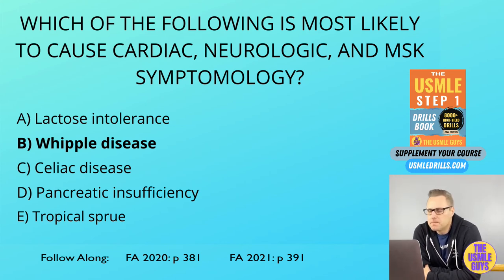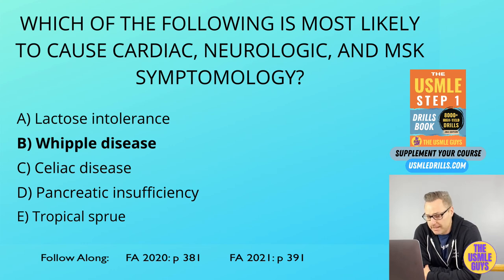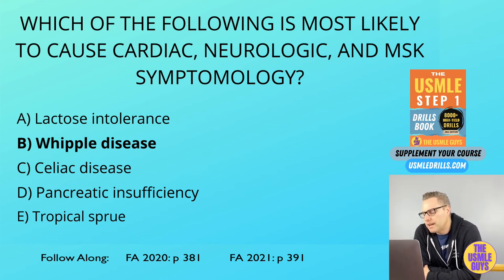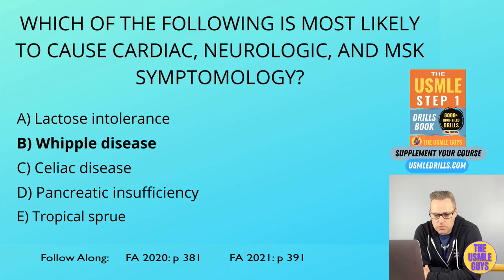The lactose hydrogen breath test is used for diagnosis — it's positive for lactose malabsorption if the post-lactose breath hydrogen rises above 20 parts per million compared to baseline. If a patient presents with this, we have two options: give them lactase supplements or have them avoid lactose — either way, the problem is typically resolved.